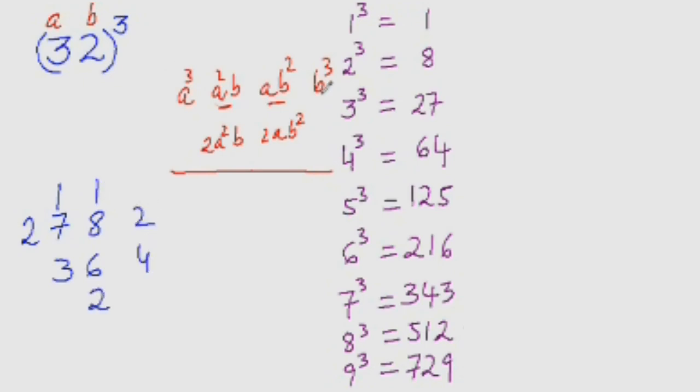Now B cube, so 2 cube is 8. Now just simply add the numbers. It would be 8, 4 plus 2 is 6, 8 plus 1 is 9, 9 plus 6 is 15, 15 plus 2 is 17. Carry forward 1, 1 plus 1 is 2, 2 plus 27 is 29 and 29 plus 3 is 32. So this is what the answer is: 32,768.